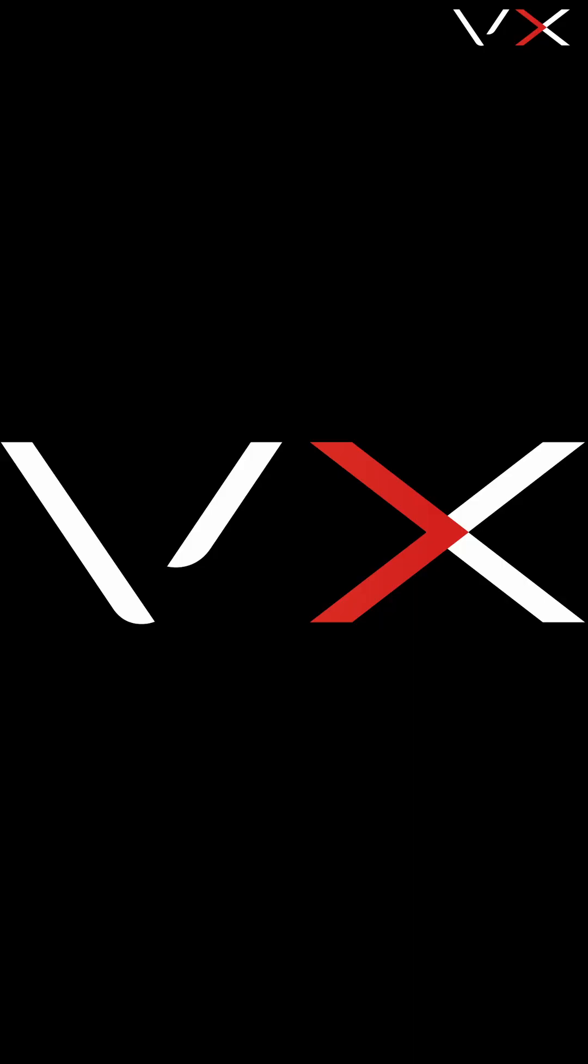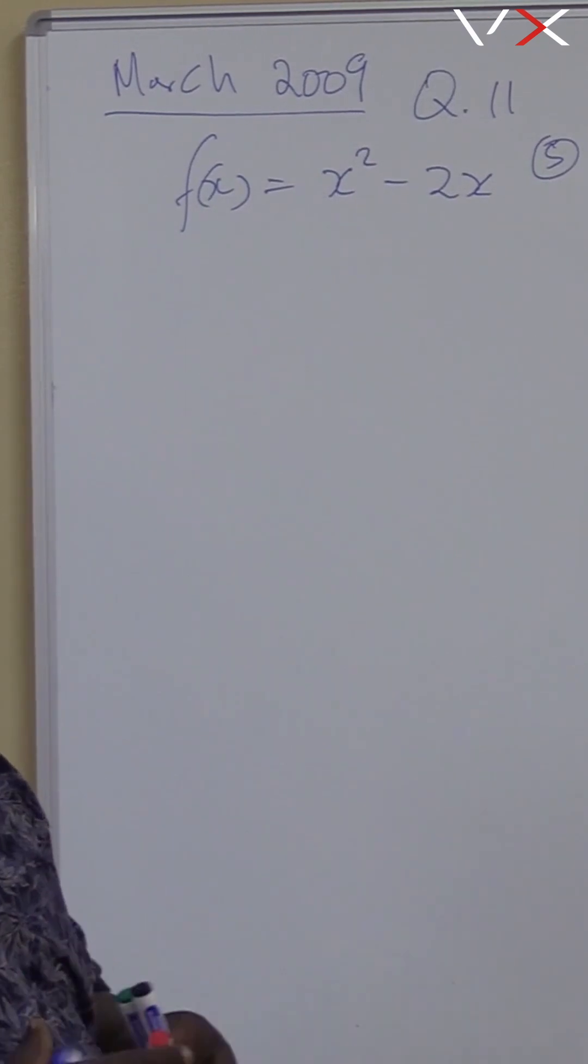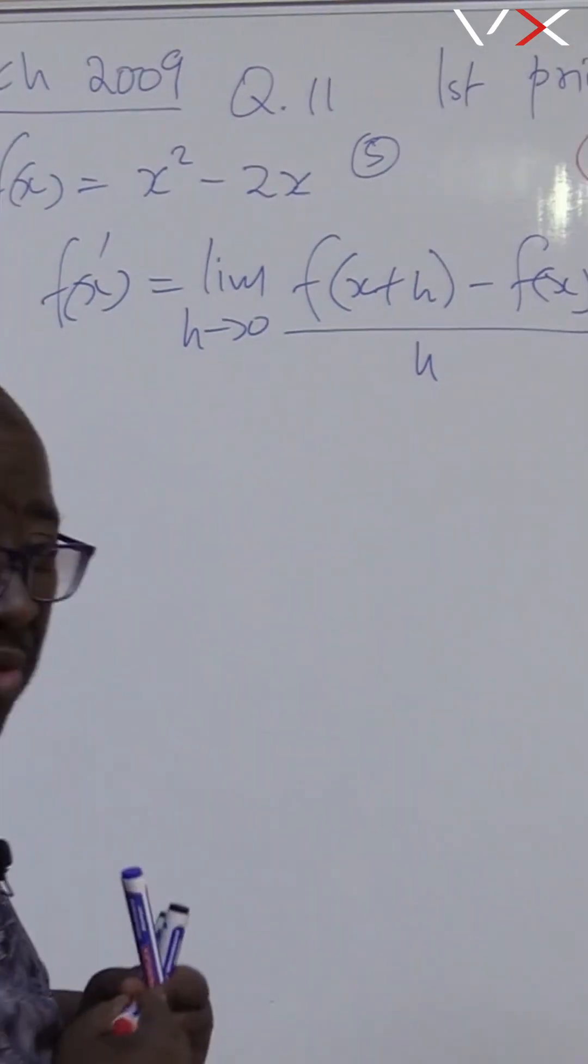All right, I want us to move on with our first principles. This is what we have. The first thing that we do is to write the correct formula. You get a mark for writing the correct formula. Let's work it out.